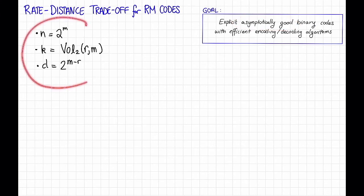We already computed their parameters N, K, and D. So now let's compute the relative distance and the rate and see how that trade-off looks. So the relative distance Delta is equal to D divided by N. That's 2 to the M minus R divided by 2 to the M, also known as 2 to the minus R. In particular, if we want this to be bounded away from 0, R needs to be a constant.